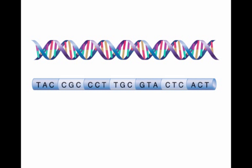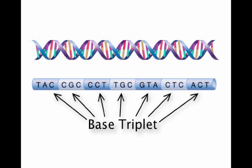Ultimately, the purpose of DNA is to represent a blueprint for building proteins by creating a code that represents the 20 amino acids. Each set of three nucleotides that represents an amino acid is called a base triplet. Using this code, each of the 20 amino acids can be represented.